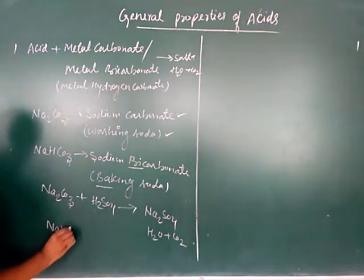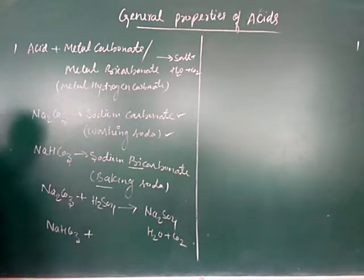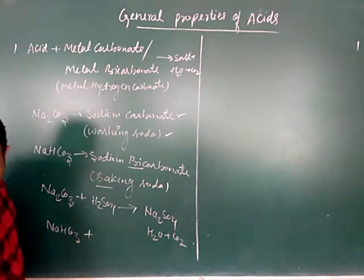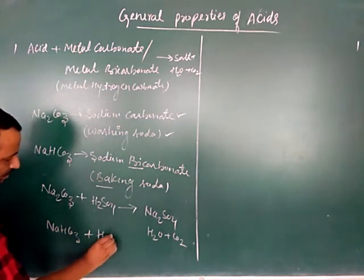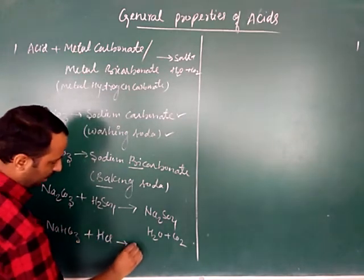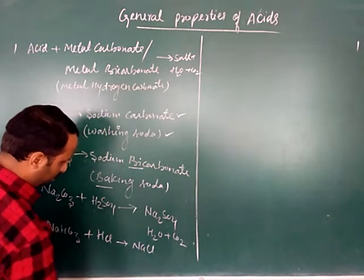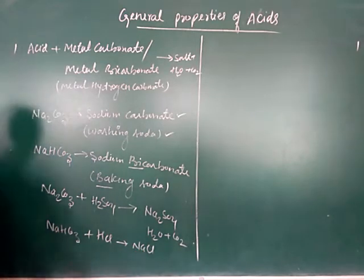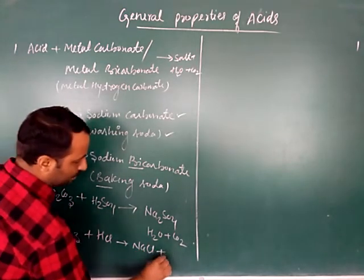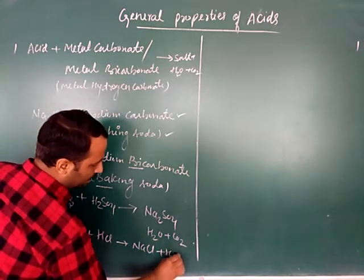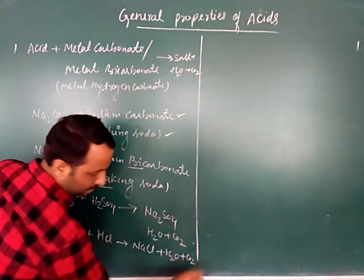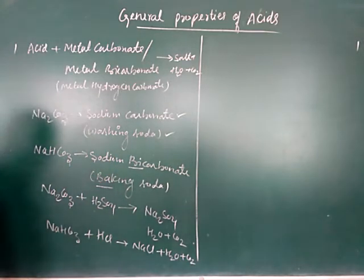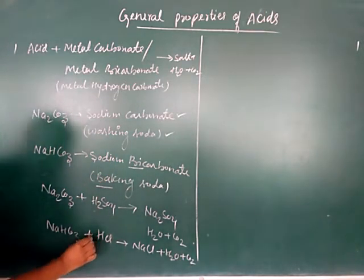If we react sodium bicarbonate NaHCO₃ with HCl, what will form? NaCl (sodium chloride) plus water plus carbon dioxide. This is the reaction.